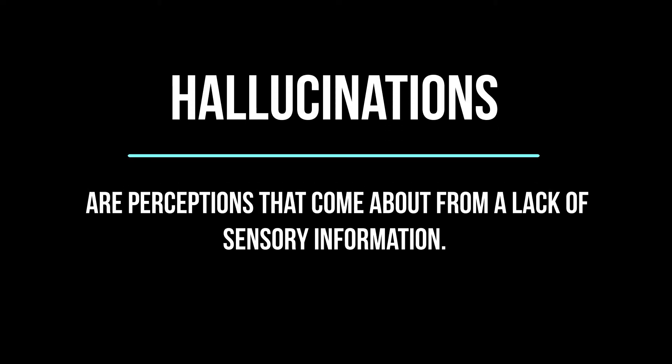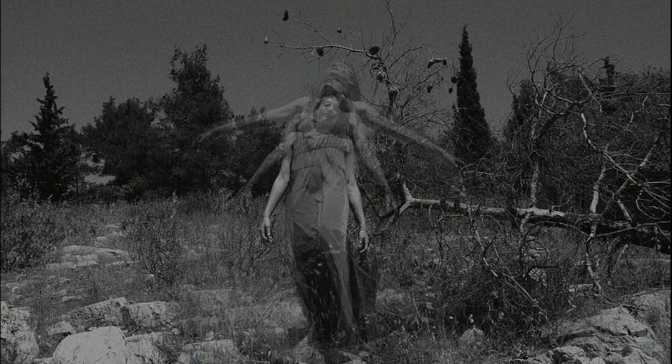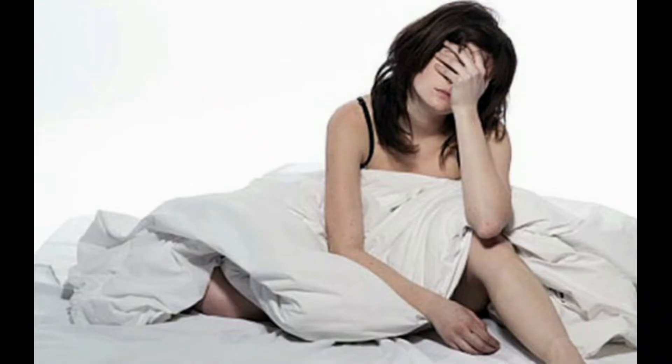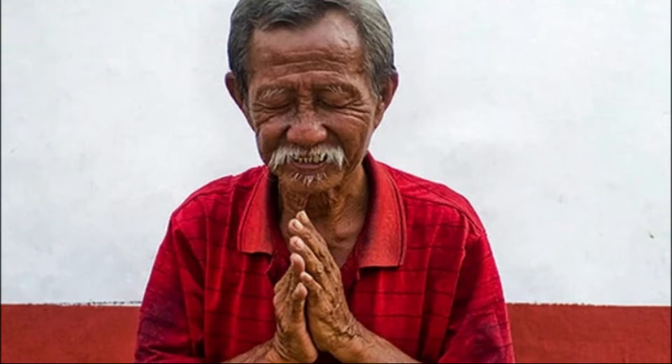Hallucinations are perceptions that come about from a lack of sensory information. Generally, people that experience hallucinations tend to have auditory or visual hallucinations, but others can take place. The individual perceives these as very real — they feel very, very real and vivid. With psychotic disorders, hallucinations tend to be voices that are different than the person's thoughts. We do not consider hallucinations that take place right before falling asleep or just before waking up as indicative of a psychotic disorder, and hallucinations during a religious event are not considered part of a psychotic disorder either.